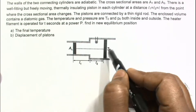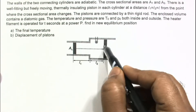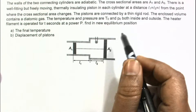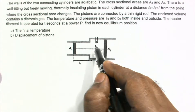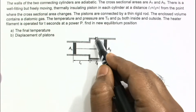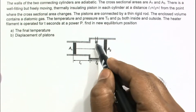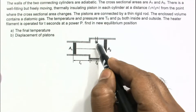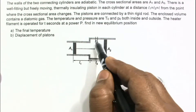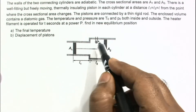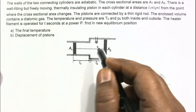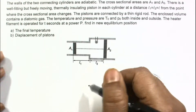The walls are adiabatic and the pistons are insulating, which means the only mode of heat transfer is via the filament. Heat will come to the gas from this filament, and no heat will leave outside the chamber or the gas.